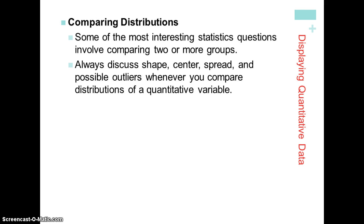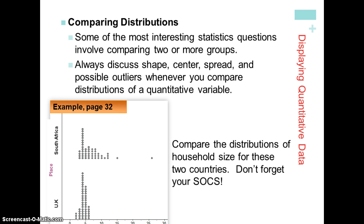When we want to compare distributions, we're going to be using that same language, that GSOCS, and we're going to compare and contrast between two different sets of data. An example here is from page 32 in our textbook, and this has to do with household size between families in South Africa and families in the United Kingdom.